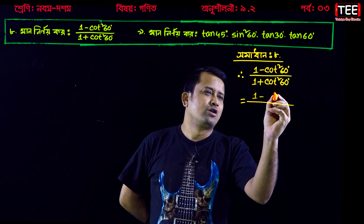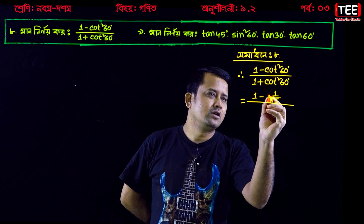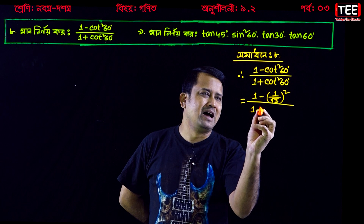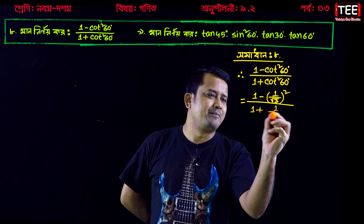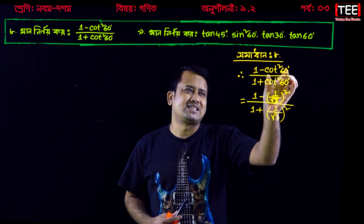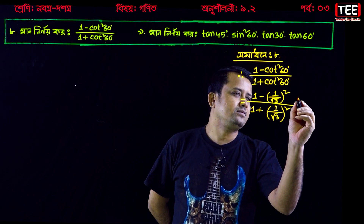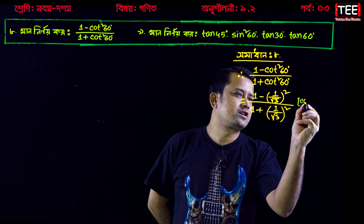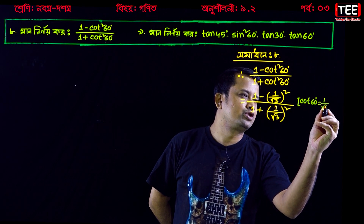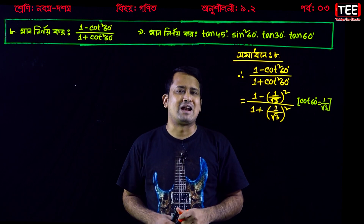We have the expression: 1 minus 1 by root 3, whole square, and 1 plus 1 by root 3, whole square. Let me write. Cot 60 degrees is equal to 1 by root 3.